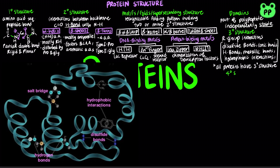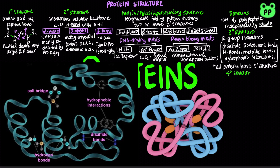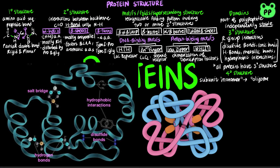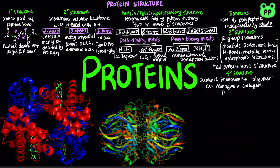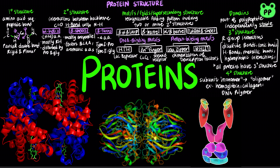However, not all proteins have quaternary structure, which occurs when two or more polypeptide monomers or subunits interact and form one macromolecule or oligomer. Proteins with quaternary structures include hemoglobin, the oxygen-carrying protein in our blood, collagen, the most abundant structural protein in our body, and DNA polymerase, which functions in DNA replication.